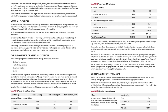Changes in the S&P TSX composite index price generally result from changes in interest rates or economic growth. The relationships between interest rate trends and economic trends, and therefore corporate profit trends, are of the greatest significance to equity price levels. These two factors, in combination, generally account for a high percentage of the change in stock market prices, and are often used together in asset mix models.